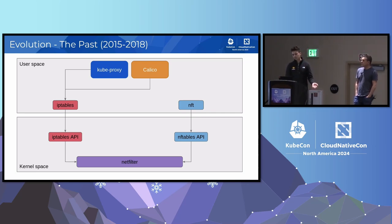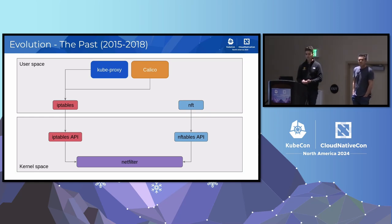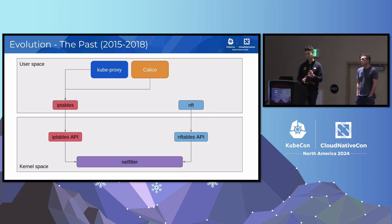Both can do things like packet manipulation, forwarding, filtering, NAT, et cetera. In the early days of Kubernetes, we picked iptables as the service implementation in Kube Proxy, as well as the network policy implementation in Calico. nftables existed at the time, but it wasn't quite as mature or ubiquitous as iptables was, so it was the right choice at the time.